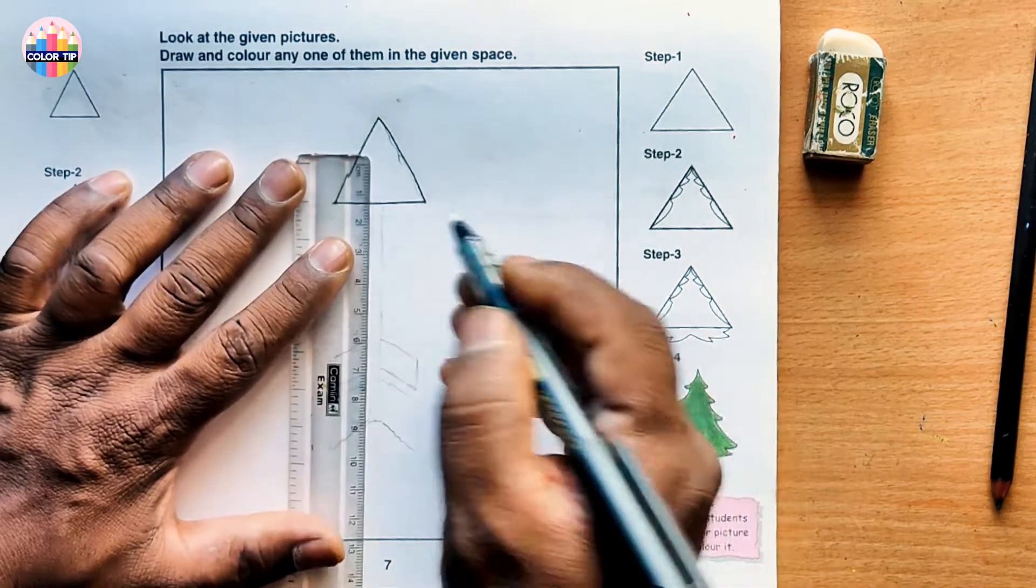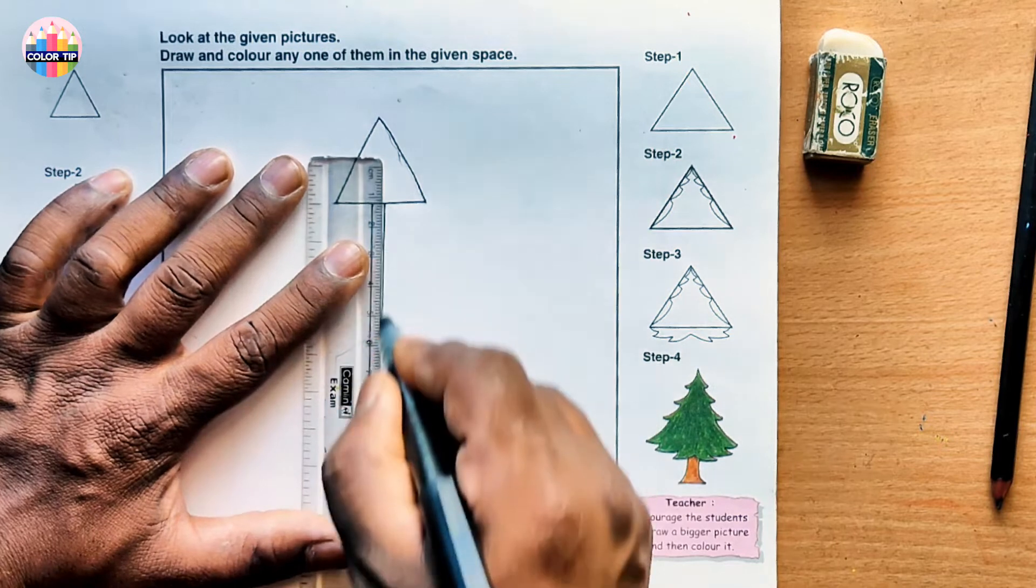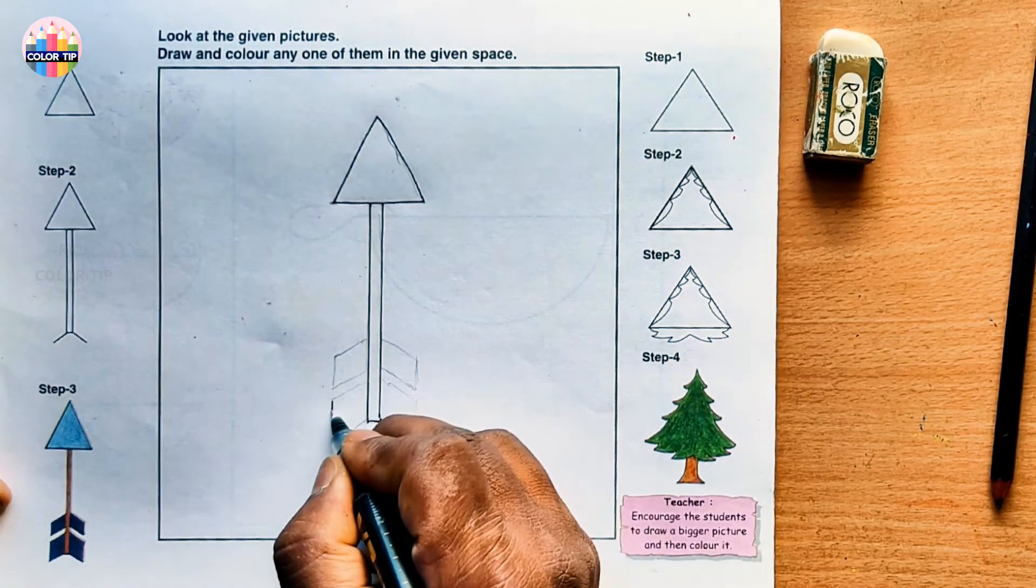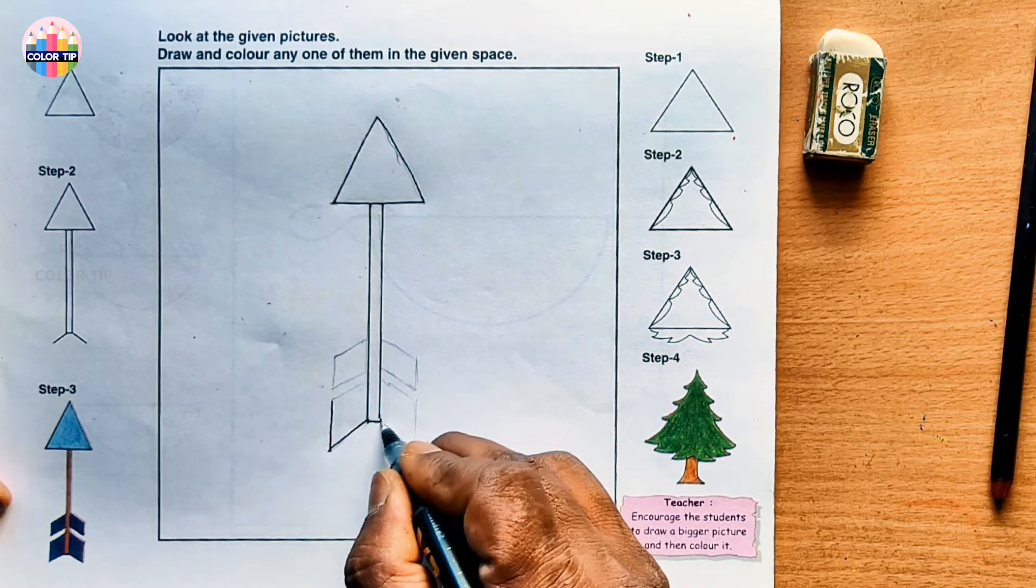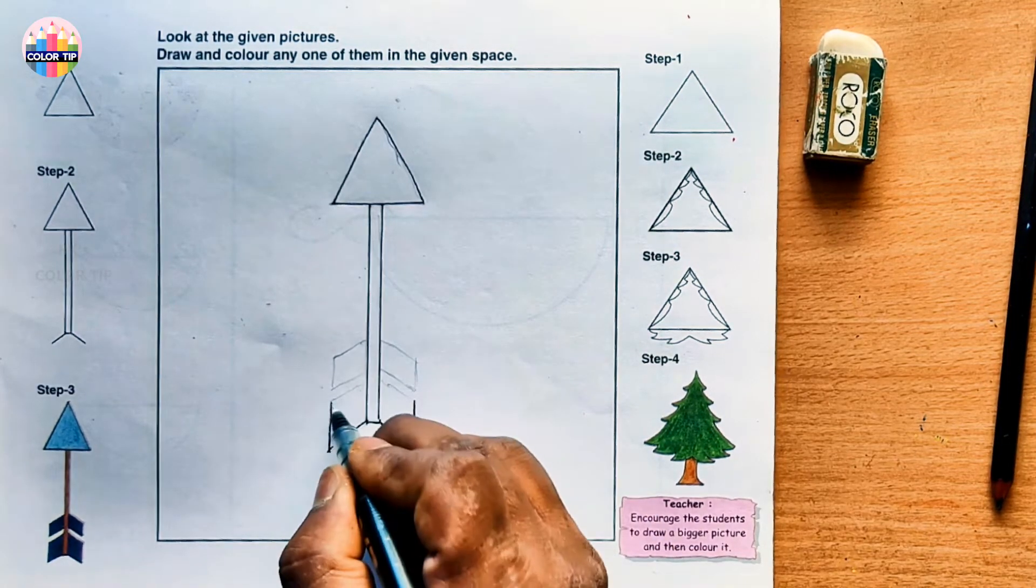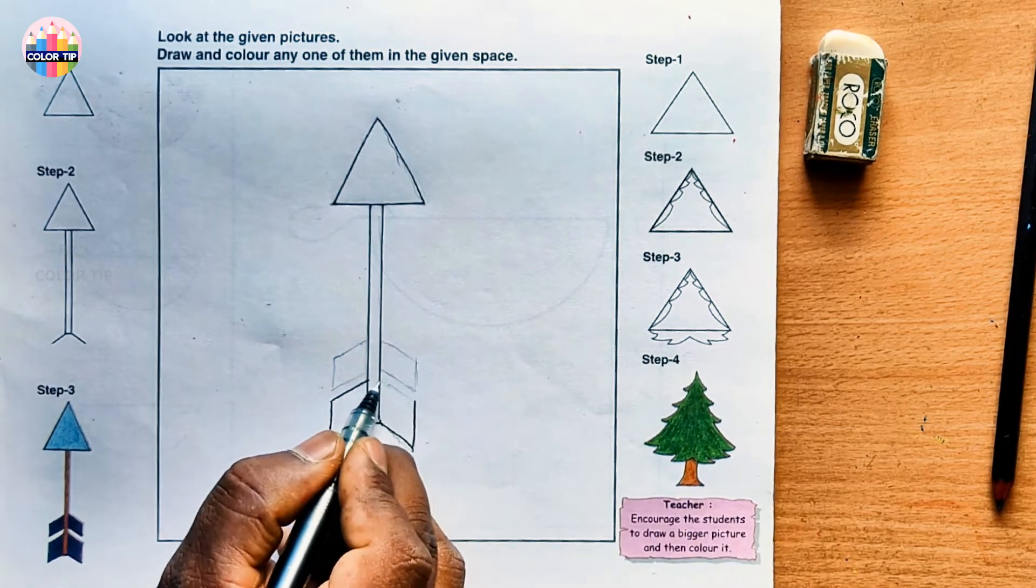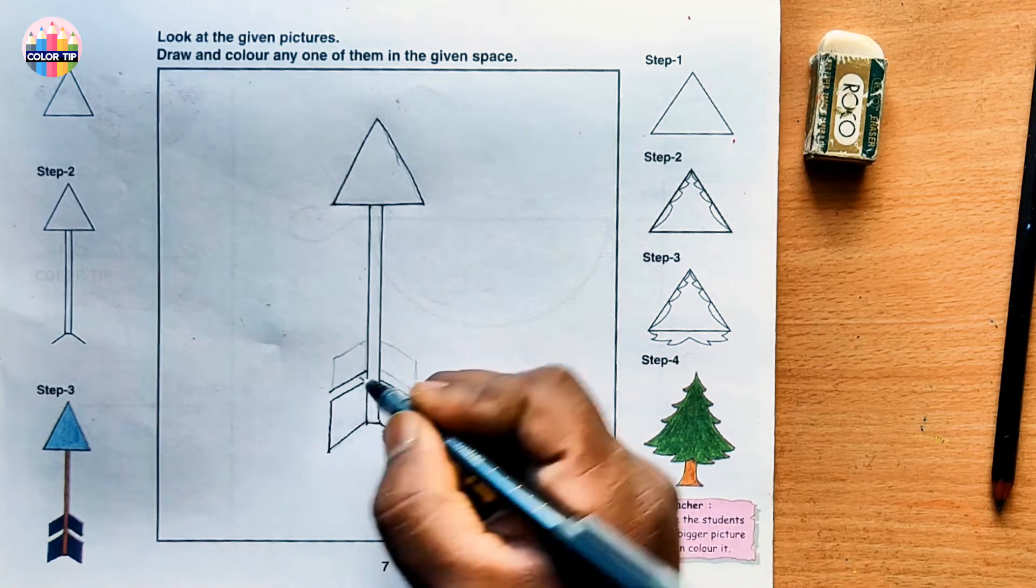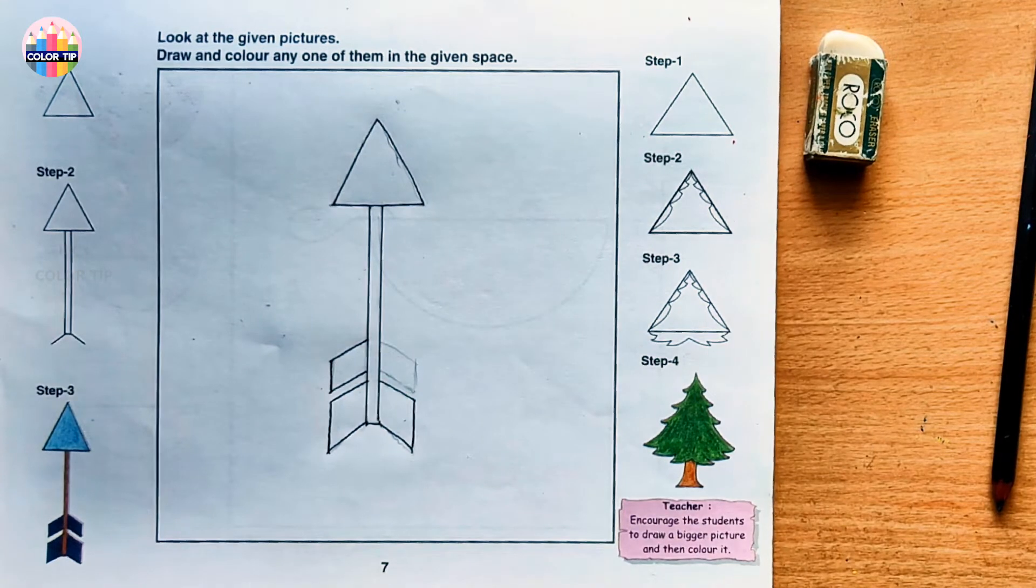Let us draw with a pen. Use a pen and the scale to get it perfectly. Draw two lines, join it, draw like a W, slanting line, and then join these two with slanting line. Join it with a vertical line.